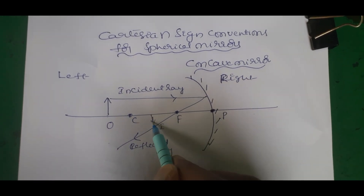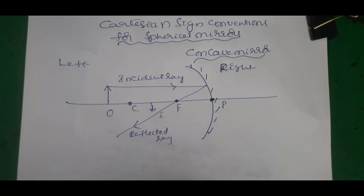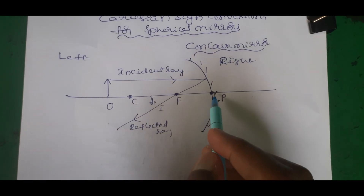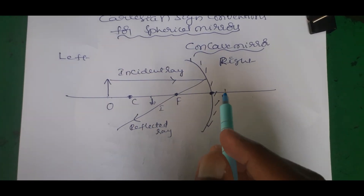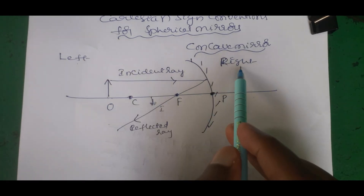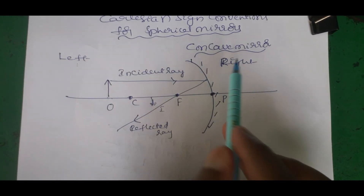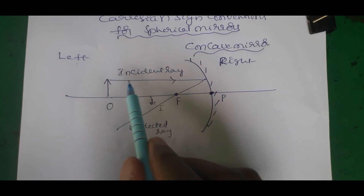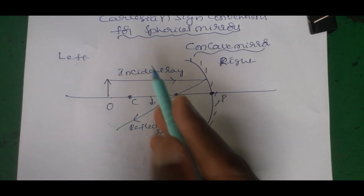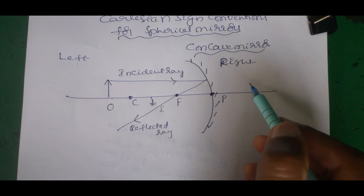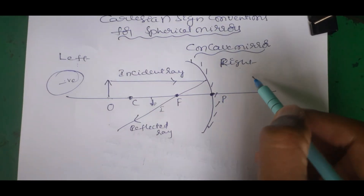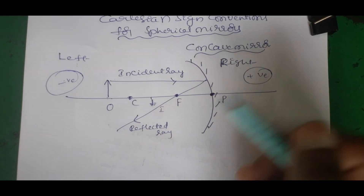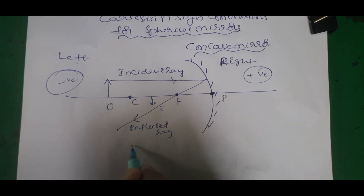In general, sign conventions theory: all distances must be measured from the pole. The incident ray travels from left to right. When we measure in the direction of the incident ray (left to right), that is positive. If we measure opposite to the incident ray direction, that is negative. Left side is negative, right side is positive.